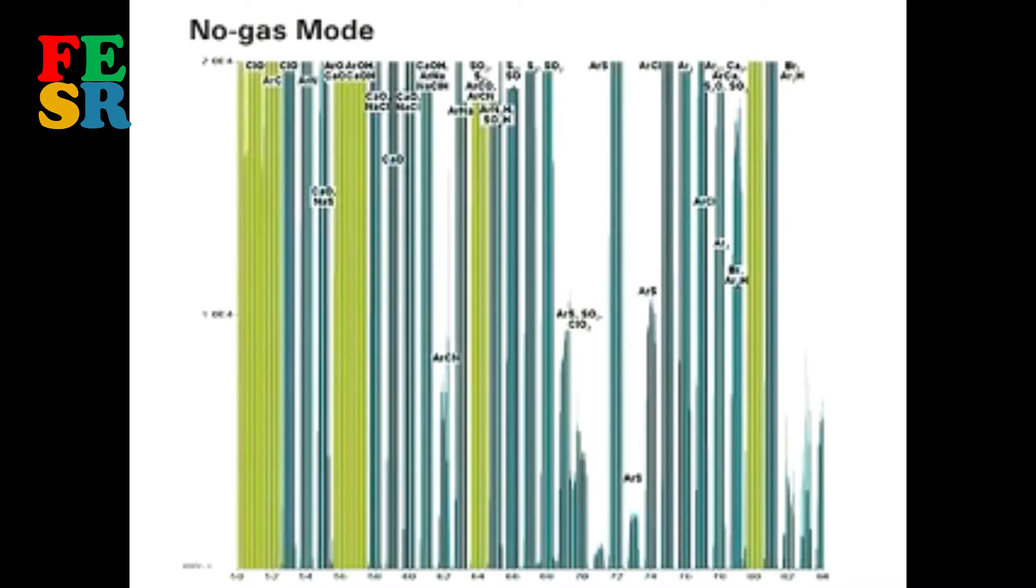This spectrum was acquired in normal mode, that is, with no gas added to the cell. Almost every analyte in this mass range suffers severe polyatomic overlaps, making quantification impossible at trace levels.